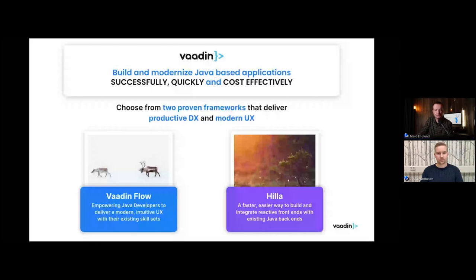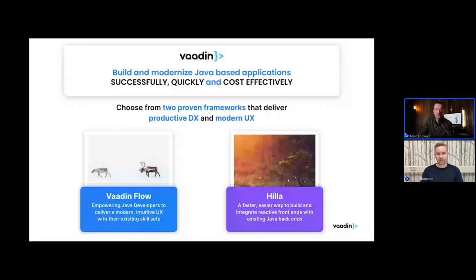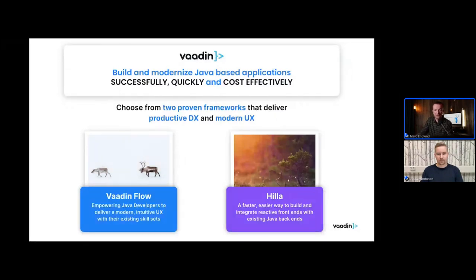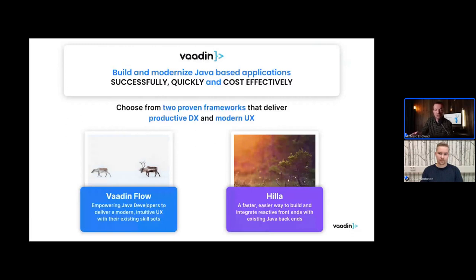If you're comfortable with modern browser-based development, the Hilla model might feel more familiar. In Flow the UI is server-driven, whereas in Hilla it's more of a client-driven UI. Both come with a complete set of accessible UI web components. By letting the framework handle all the generic challenges common to all applications, you can focus on making a good UX for the specific things your application is solving.